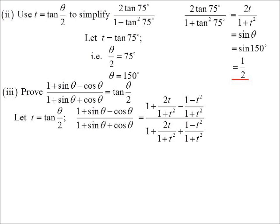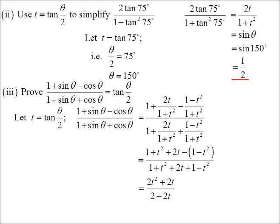And you'll notice again, because I'm just dealing with sines and cosines, all those denominators are one plus T squared. So I can multiply everything by one plus T squared. We have one plus T squared plus two T minus all of one minus T squared on the top. One plus T squared plus two T plus one minus T squared on the bottom. What does that tidy up to be? Two T squared plus two T on top. Two plus two T on the bottom.